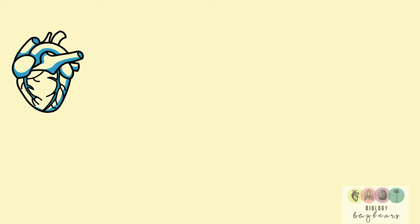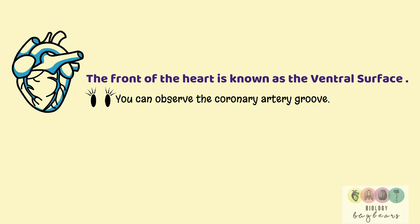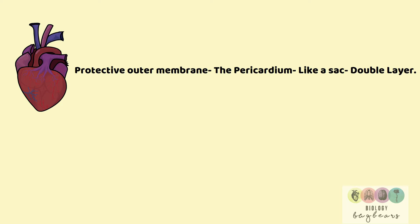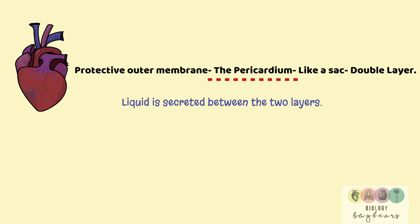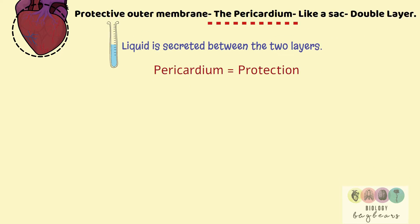The front surface of the heart is known as the ventral surface — this has been asked a few times. It's more rounded, and you'll also know it because you can observe the coronary artery groove, and there are coronary blood vessels in this. The heart is surrounded by a protective membrane called the pericardium. It's a bit like a sack — it's made up of two layers, and between both layers a liquid is secreted that allows for the friction-free movement of the heart. The pericardium protects the heart against friction and also against over-expansion.